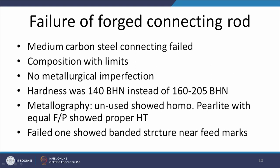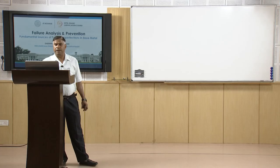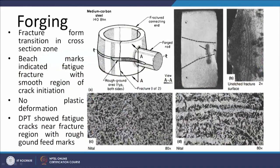Metallography of the unused rod showed homogeneous pearlite with equal amounts of ferrite and pearlite, indicating proper heat treatment was carried out. However, the failed component showed a banded structure near the fracture marks. The failed connecting rod fractured from a particular location, and its cross section showed that the crack nucleated at a specific area. Microscopy of the unused component confirmed a ferritic and pearlitic structure with approximately equal amounts of ferrite and pearlite.